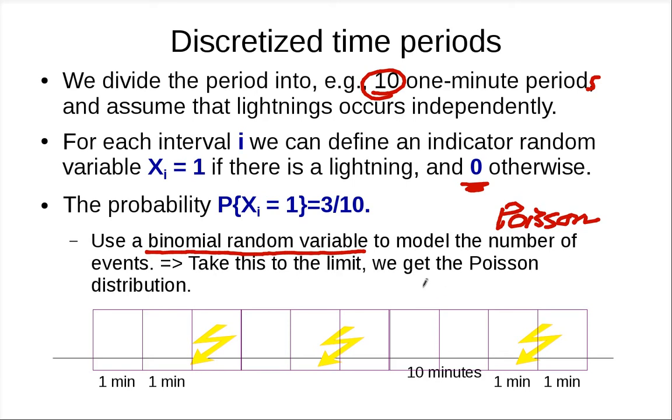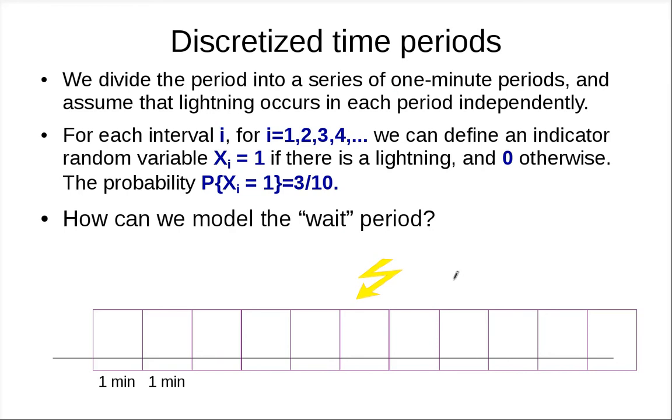So if we want to model the wait period instead, in this case we want to model how long do we need to wait until we first see this. How are we going to do that using the same kind of modeling?